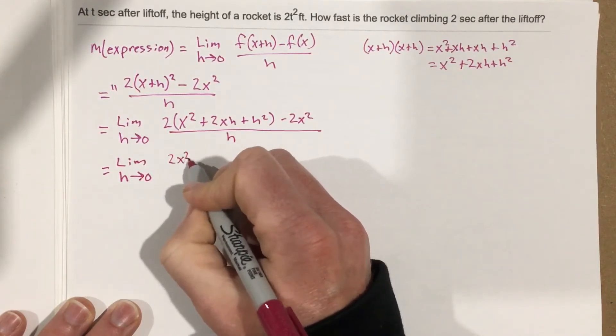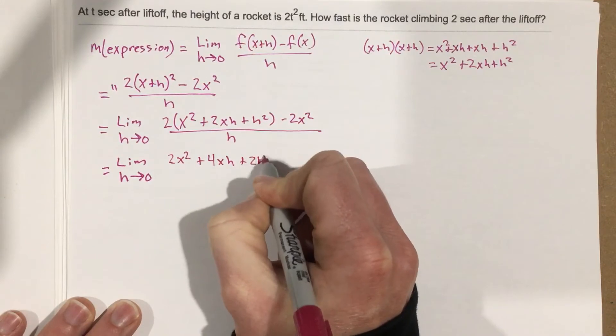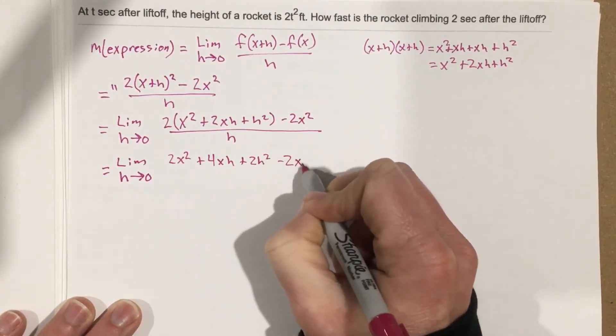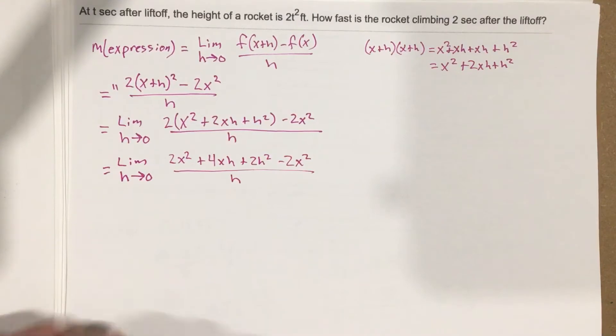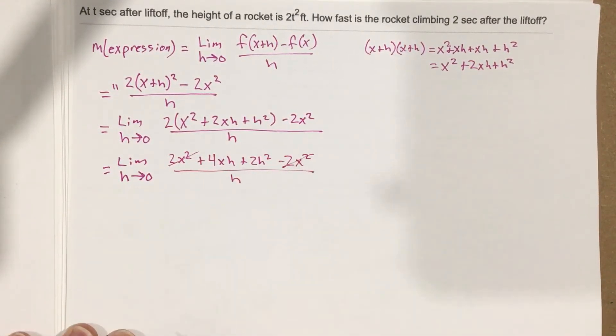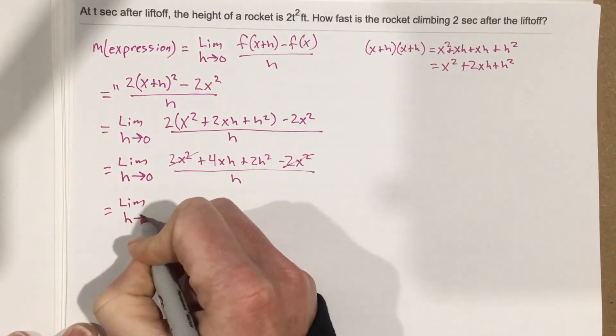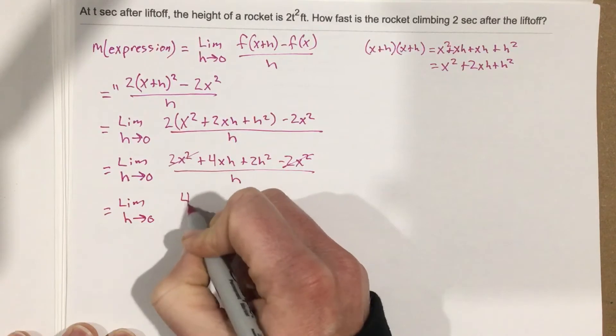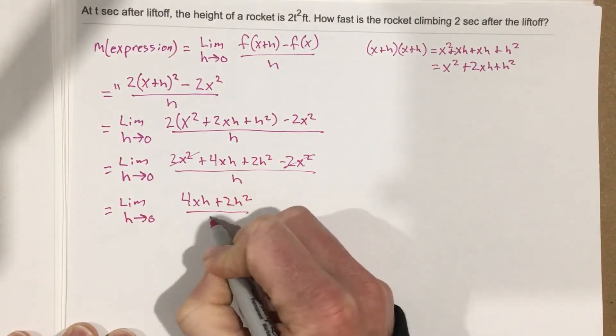The 2x squared cancels with the negative 2x squared, and we're left with the limit as h approaches 0 of 4xh plus 2h squared, all over h.